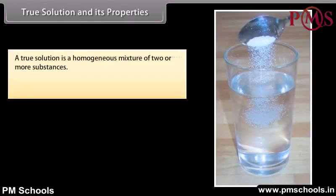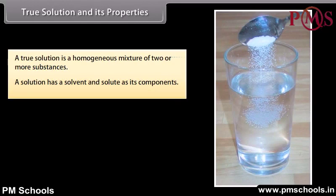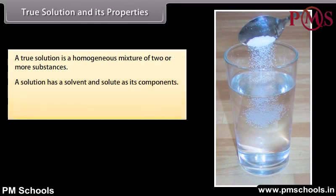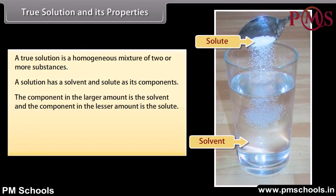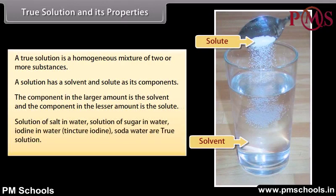A true solution is a homogeneous mixture of two or more substances. A solution has a solvent and a solute as its components. The component in the larger amount is the solvent and the component in the lesser amount is the solute. Examples of true solutions include solution of salt in water, sugar in water, iodine in water (tincture iodine), and soda water.